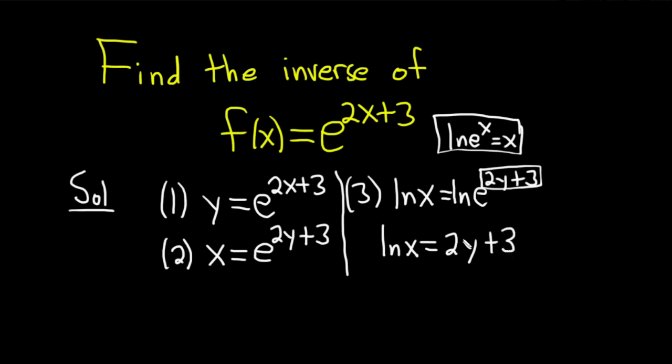And we're looking for y. So we do basically have to isolate this piece here. So because we have a plus 3, we can subtract 3 from both sides. So minus 3, minus 3. We have ln x minus 3 equals 2y.